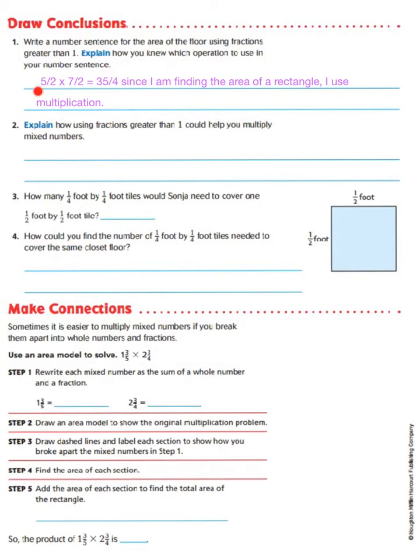And we know numerator times numerator equals numerator. Denominator times denominator equals denominator. Now, let's look even further. Explain how using fractions greater than 1 could help you multiply mixed numbers. Well, changing the mixed number into a fraction greater than 1 helps you multiply because then you can multiply the numerators and the denominators. It just simplifies the process.